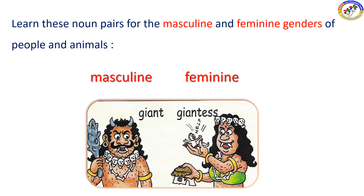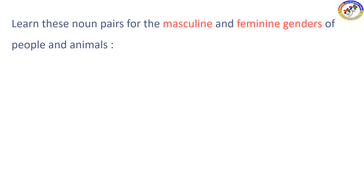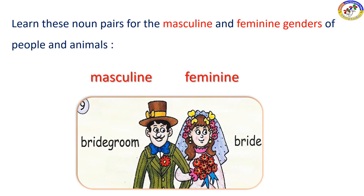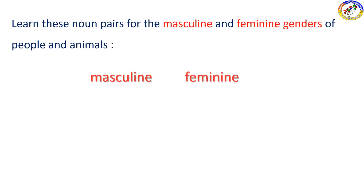Giant and giantess — the masculine is giant and the feminine is giantess. Bridegroom and bride — bridegroom is masculine and bride is feminine.